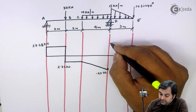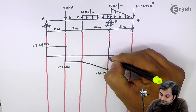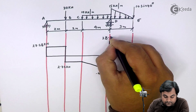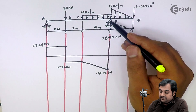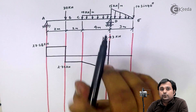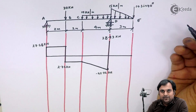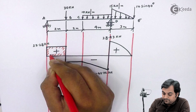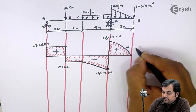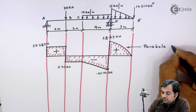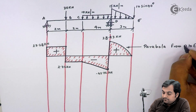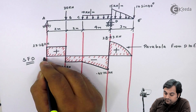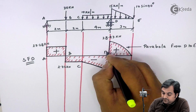Now at D we are having again a value of shear force which is positive — twenty-eight point nine-three kilonewton. As we can see, between D to E that is UDL, so whenever we have UDL, shear force will be a parabola. So here I have a parabolic curve between D to E. Here we have parabola from D to E.